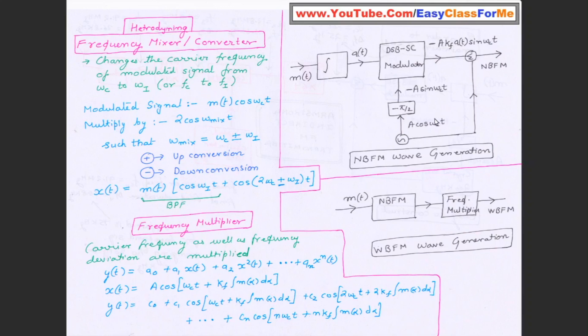we have this very simple arrangement. What we do is we use a double sideband suppressed carrier modulator here and you apply a signal which is message signal integrated. You will get at and instead of taking the carrier as a cos ωct, you shift the phase by minus π by 2 and hence you will get a signal minus a kf at sin ωct and you add the original carrier here.